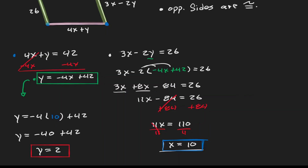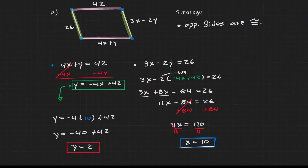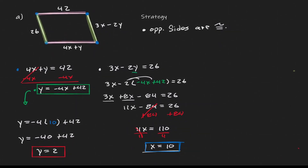Let's understand our conclusion. Looking at this quadrilateral, if we let x equal 10 and y equal 2, we ensure that opposite sides are equal to each other. And if opposite sides are equal to each other, then we can label this quadrilateral as a parallelogram.